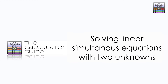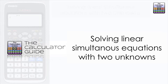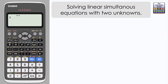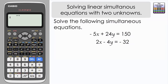Hello and welcome to the calculator guide video on solving linear simultaneous equations with two unknowns. We are going to use the equation mode in this particular video to solve these two simultaneous equations: minus 5x plus 24y equals 150, and 2x minus 4y equals minus 32.